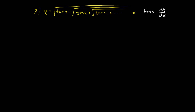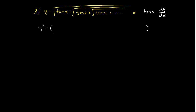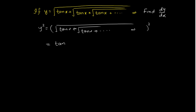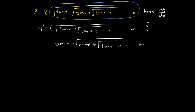Squaring both sides, y squared equals square root of 10x plus square root of 10x and so on. The outer square root is cancelled, giving y squared equals 10x plus square root of 10x and so on. Since square root of 10x plus square root of 10x up to infinity equals y, this term equals y. Therefore y squared equals 10x plus y.